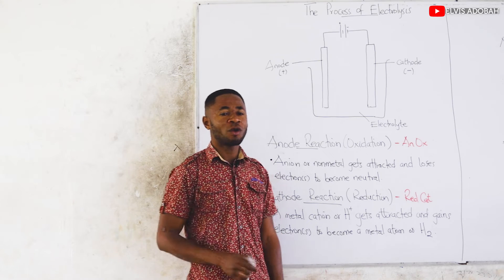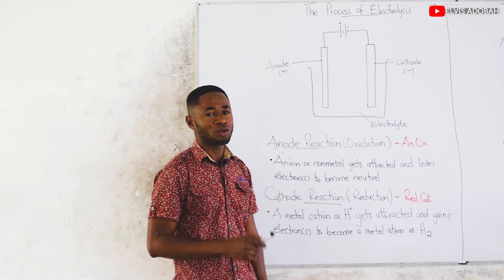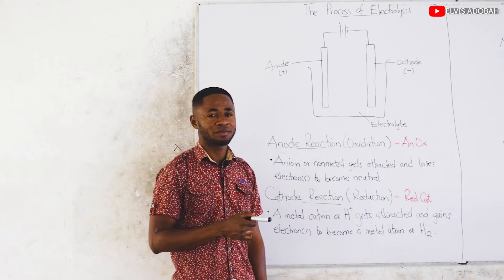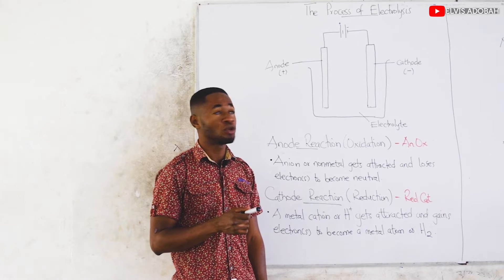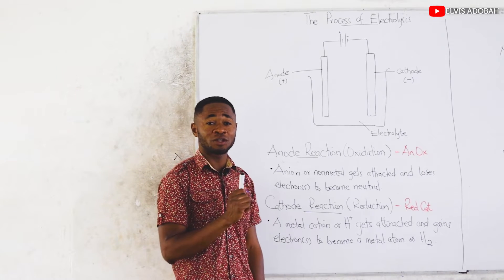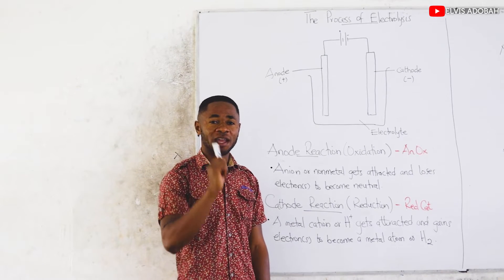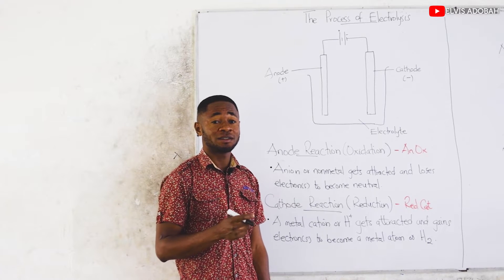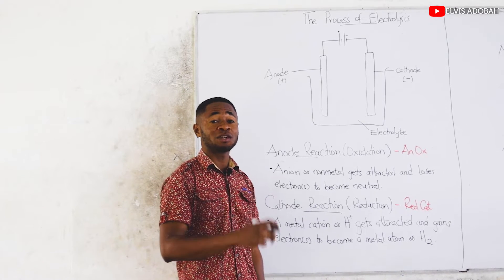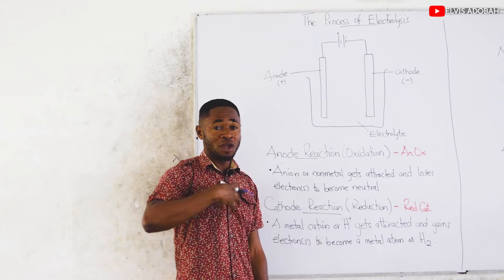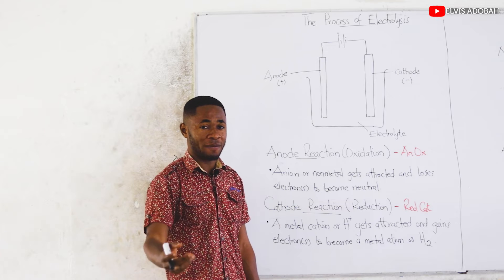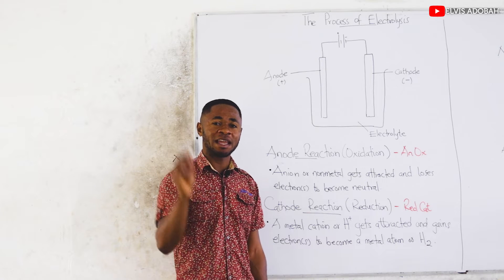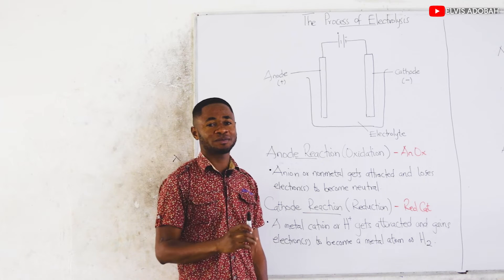Hello students. Welcome once again to Chem is Try. In our previous video, we were introduced to the topic electrolysis. We said there's a reaction that doesn't want to occur, but we want to force it to let it occur. And we force it by passing electricity through it.